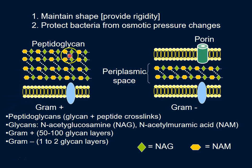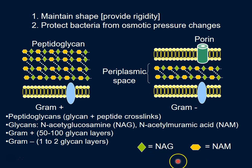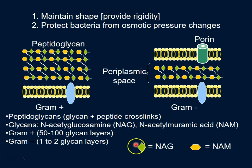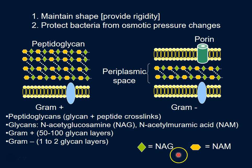Gram-positive have a much thicker cell wall — about 50 to 100 times thicker than the cell wall in gram-negative. Now I'm going to focus on how the cell wall is put together and explain in detail how the building blocks are placed in the cell wall.